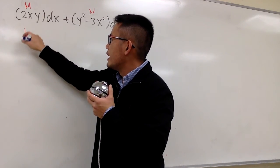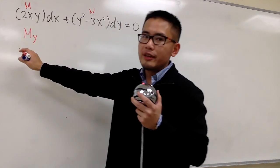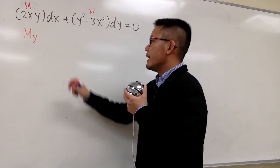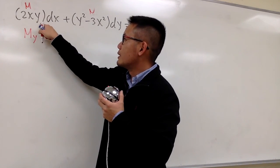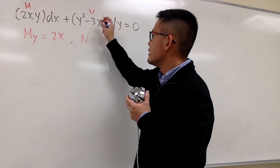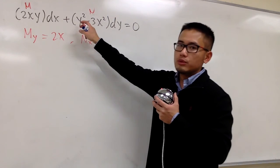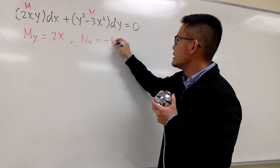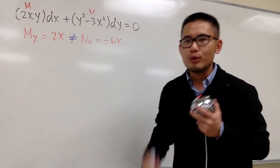For M, we'll take the partial of M with respect to y — that's M sub y. The derivative of this with respect to y, you just get 2x. And for N, we'll take this with respect to x, and this will be 0. Negative 3x squared gives you negative 6x. Unfortunately, they are not the same at the moment.